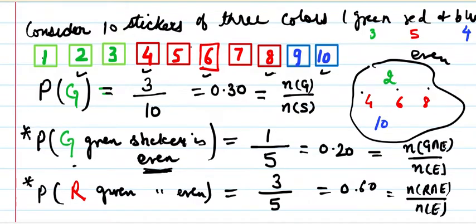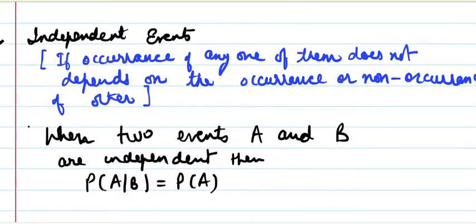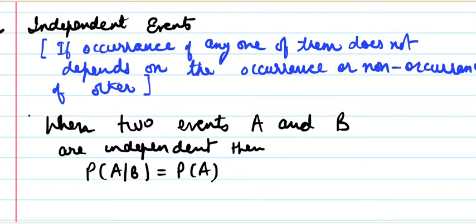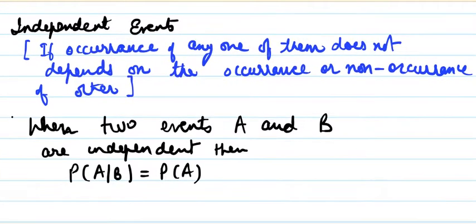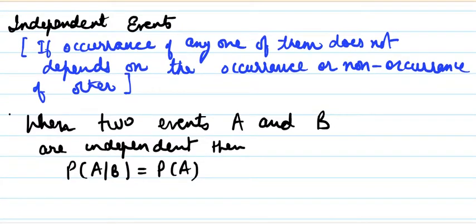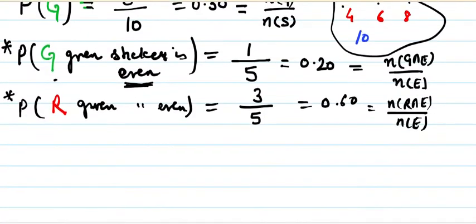Now let's look at independent events. Two events are said to be independent if the occurrence of one does not depend on the occurrence or non-occurrence of the other. If A is independent of B, then P(A|B) equals P(A) — the probability is not affected and remains the same as its original probability from the sample space.